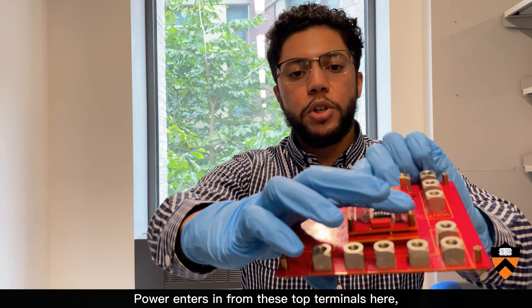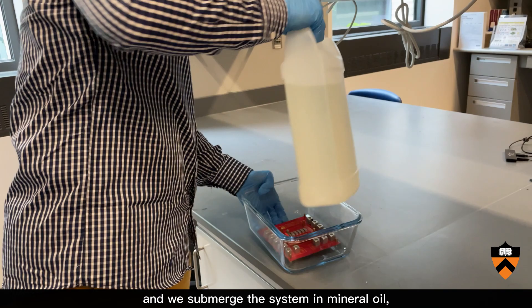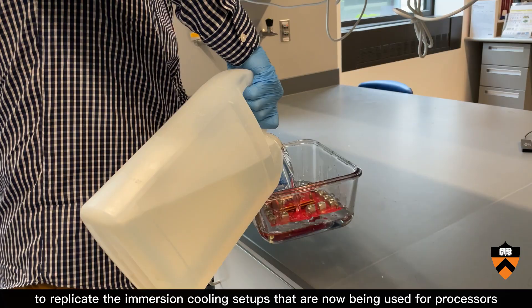So power enters in from these top terminals here, goes through the circuit, and exits from these large terminals and interfaces with the electronic load. We then take this entire system and we place it into a container and we submerge the system in mineral oil to replicate the immersion cooling setups that are now being used for processors that consume a large amount of power.